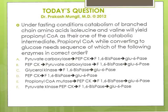Propionyl-CoA is initially converted to methylmalonyl-CoA by the enzyme propionyl-CoA carboxylase, which requires the cofactor biotin. Then methylmalonyl-CoA is converted to succinyl-CoA by the enzyme methylmalonyl-CoA mutase, which requires deoxyadenosylcobalamin — a form of vitamin B12.